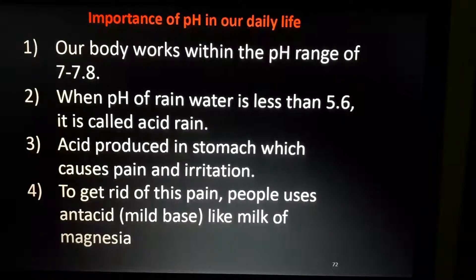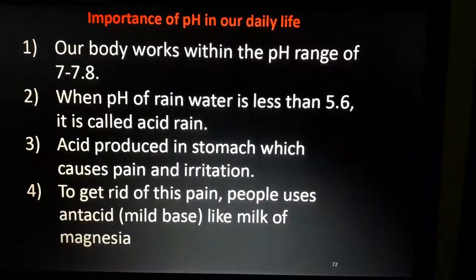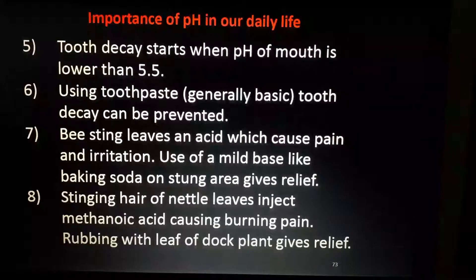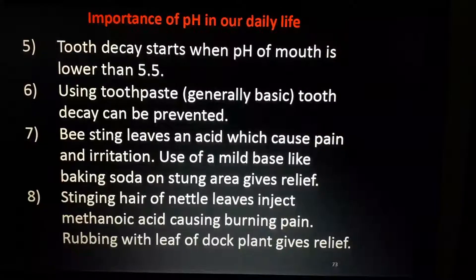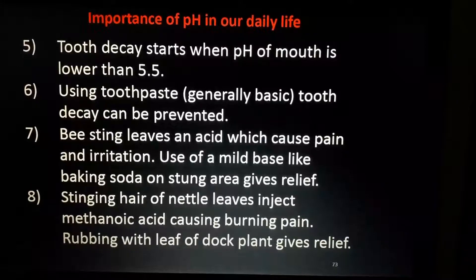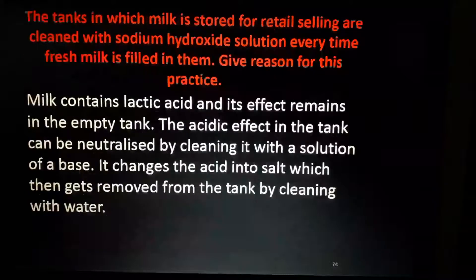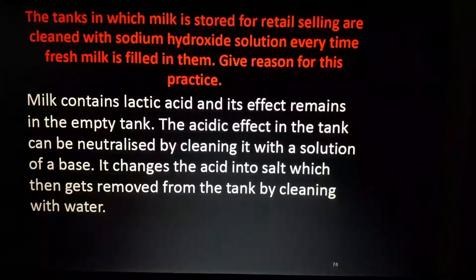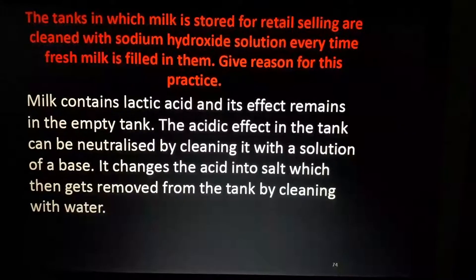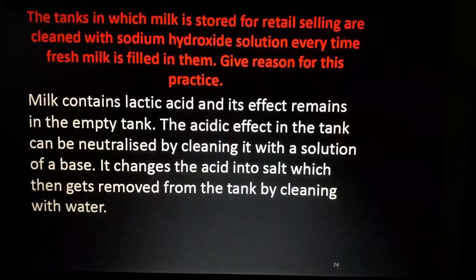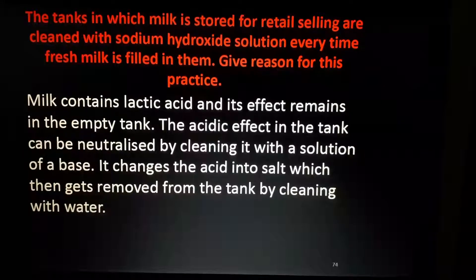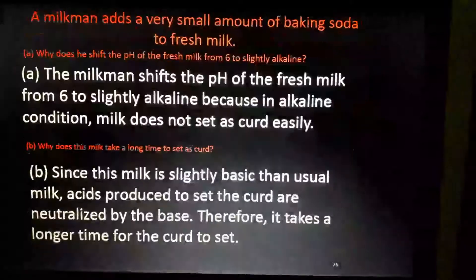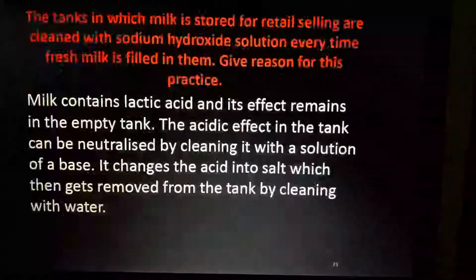Acid produced in the stomach causes pain and irritation. To get rid of this pain, people use antacids — a mild base like milk of magnesia. Tooth decay starts when the pH of the mouth is lower than 5.5, and using toothpaste helps. For bee and nettle stings, use of a mild base helps. Tanks in which milk is stored — the milkman adds a small amount of baking soda to fresh milk.